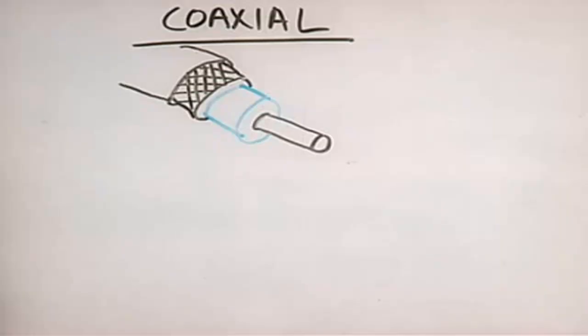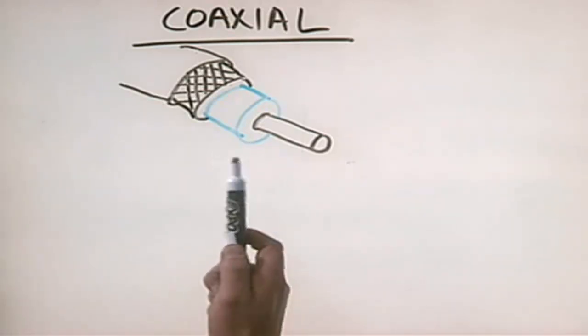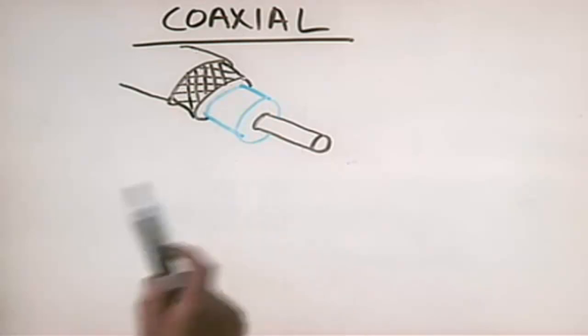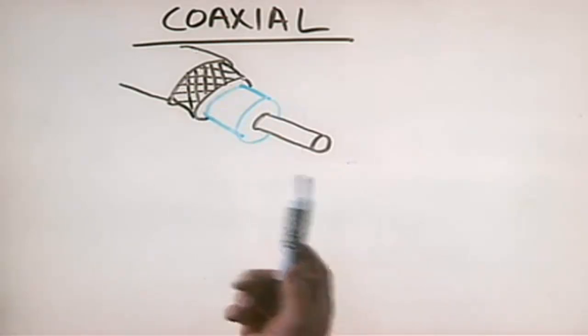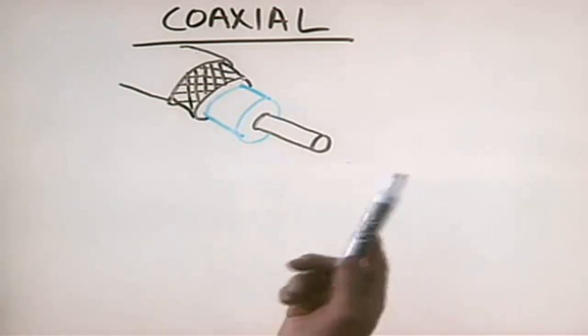The first type of networking media we need to talk about is called coaxial. Coaxial network cabling is similar to the coaxial cabling you use at home to connect up your cable TV or satellite dish system. However, the type of coaxial cable used for networking is not the same as that which is used for satellite or cable TV.